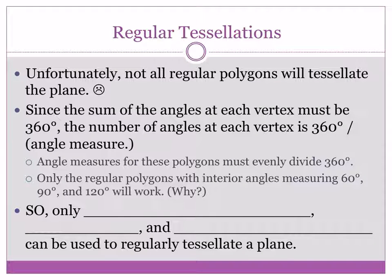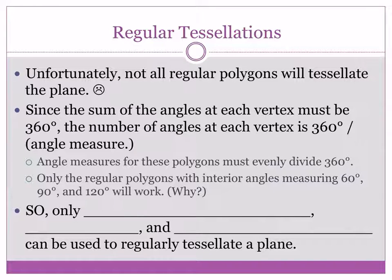Unfortunately, not all regular polygons will tessellate in the plane. Since the sum of the angles at each vertex must be 360 degrees, the number of angles at the vertex must be 360 divided by the angle measure. That's why I was asking you to look at angle measures when you were working with those shapes.